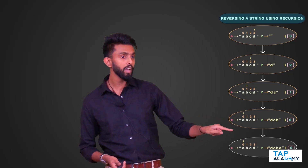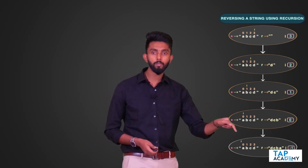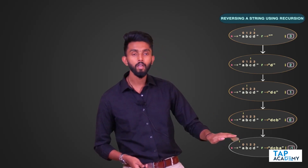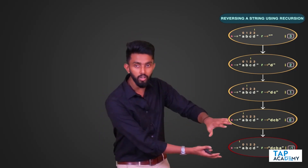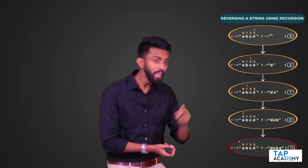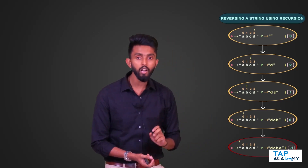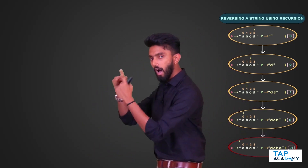Then I reduce `i` by 1, so `i` becomes -1. When `i` becomes -1, it has gone out of the string bounds - there's no point in continuing. This means we've hit the base condition. Now, is the base condition defined using `s`, `R`, or `i`? Think about it.